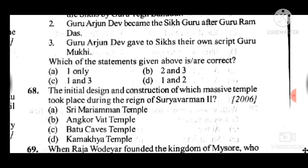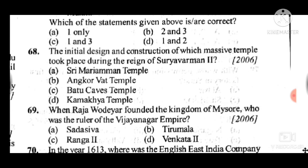Answer to question 68 is B: Angkor Wat Temple. Question 69: Where did Raja Udaiyar found the kingdom of Mysore? He was a ruler under the Vijayanagara Empire. Answer to question 69 is D: Krishnas second — when Krishnadevaraya II was ruler.